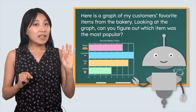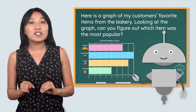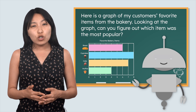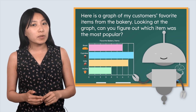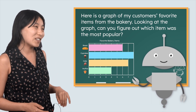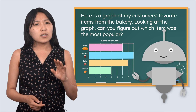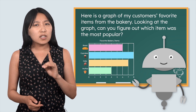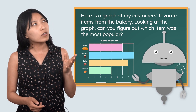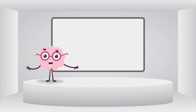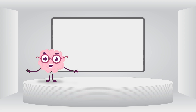It says, here is a graph of my customers' favorite items from the bakery. Looking at the graph, can you figure out which item was the most popular? Of course we can figure it out, Mia. Now that I think about it, I think I've seen a graph like this before. We've already learned about collecting data, which is specific information. We've also learned that a graph is what we use to represent or show data.